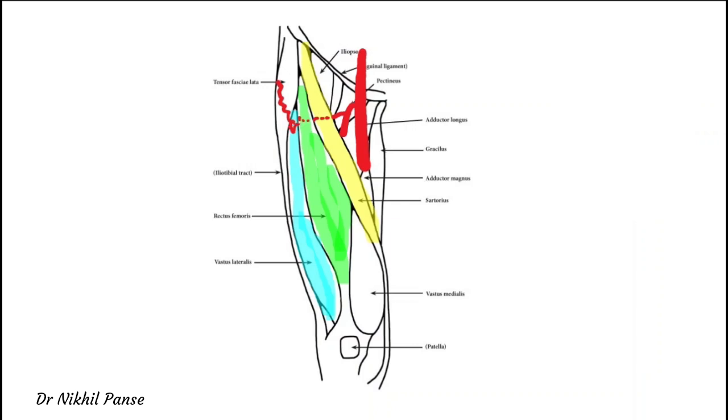Ascending branch supplies the gluteus maximus, gluteus medius, and skin over the superior aspect of the thigh. Transverse branch supplies the TFL muscle.